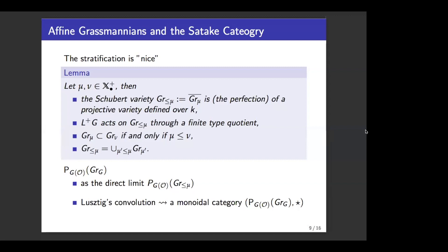We know from the definition, using this homogeneous space, that the L⁺G group acts on the affine Grassmannian. In fact, L⁺G acts on the Schubert variety, and this action factors through a finite quotient. We have an inclusion relation between two Schubert cells when their corresponding dominant co-characters satisfy the partial order. Finally, we know that the Schubert variety equals the union of Schubert cells whose corresponding dominant co-characters are less than or equal to μ.